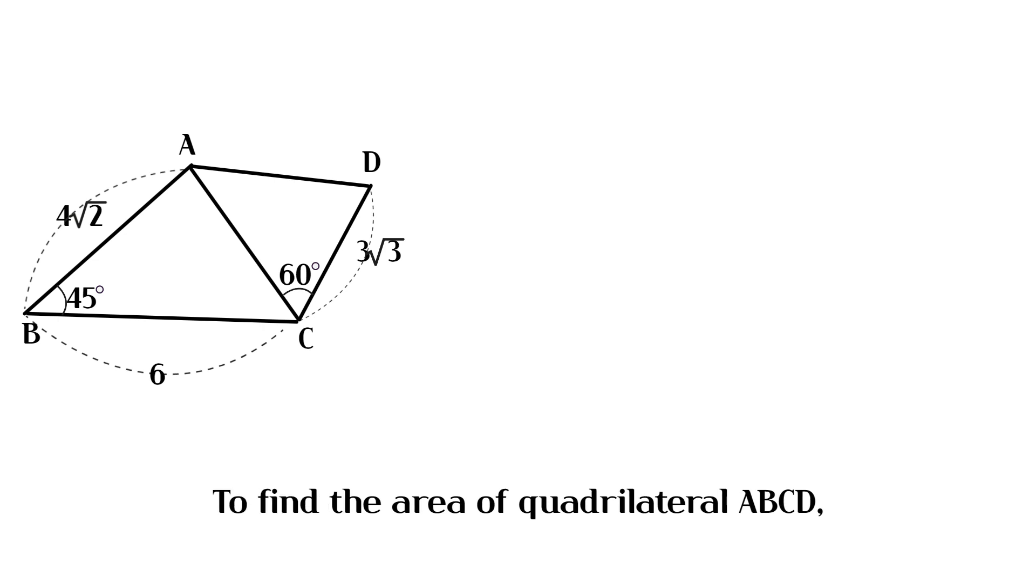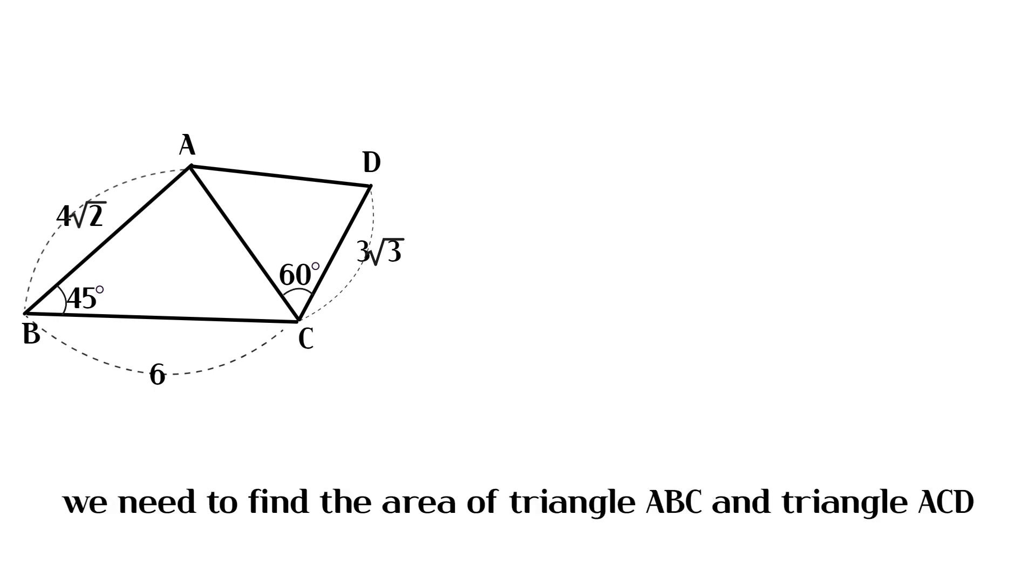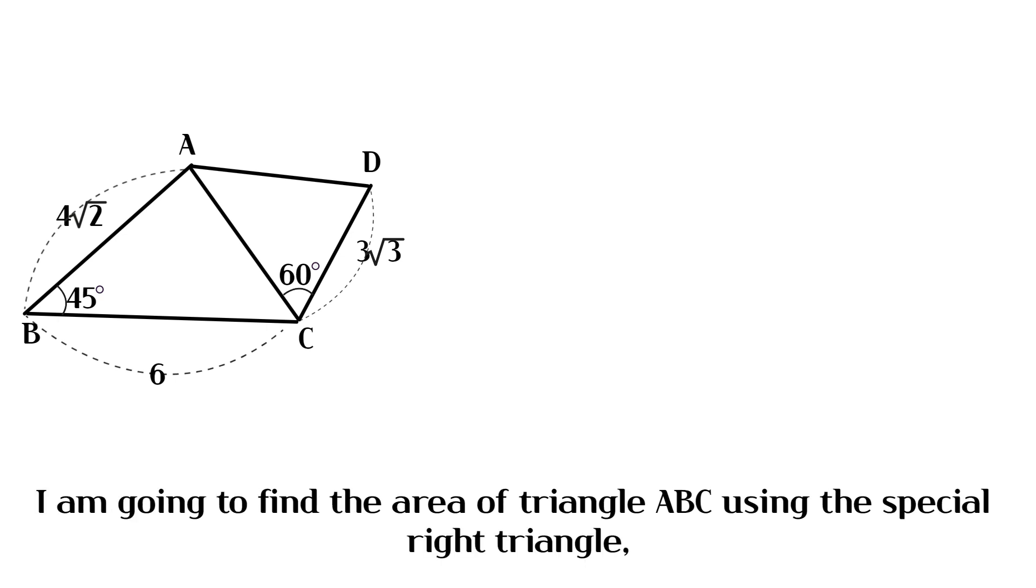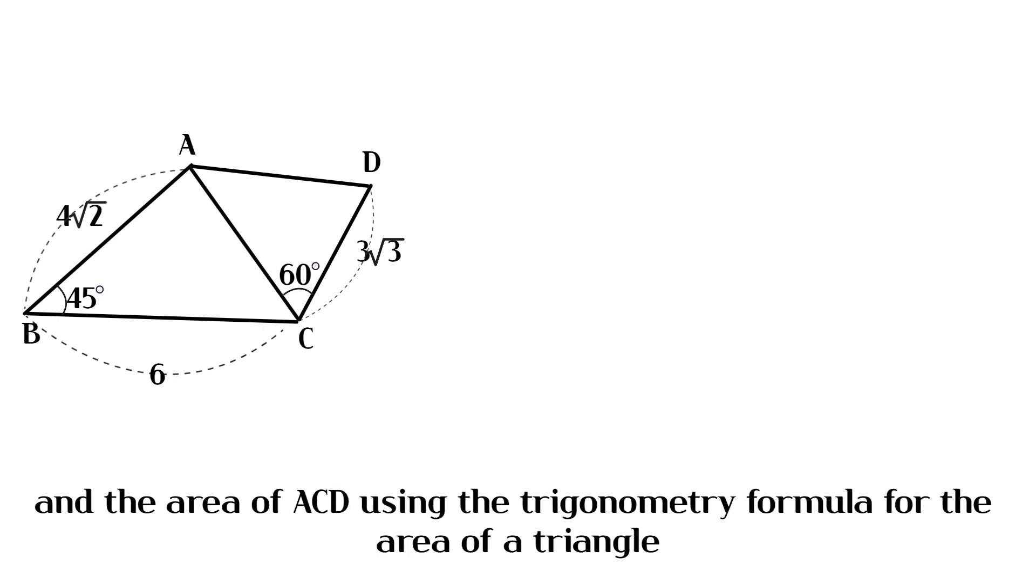To find the area of quadrilateral ABCD, we need to find the area of triangle ABC and triangle ACD. I am going to find the area of triangle ABC using the special right triangle, and the area of ACD using the trigonometry formula for the area of a triangle.